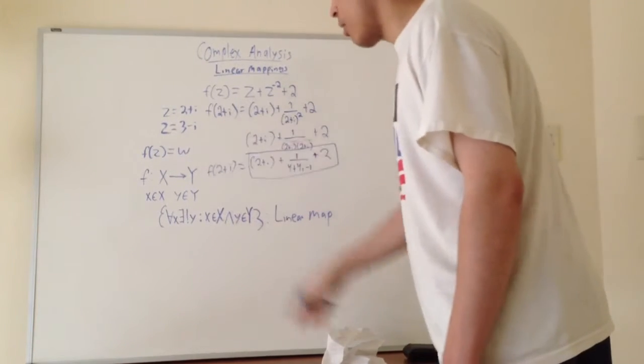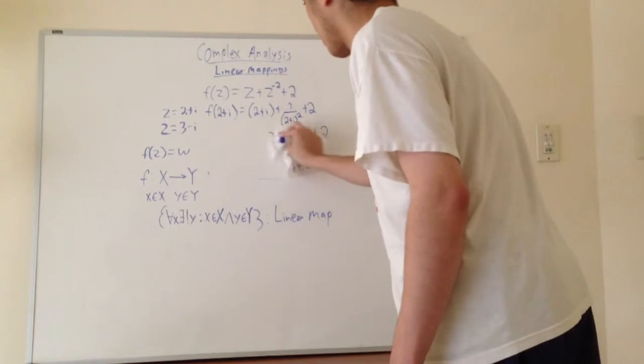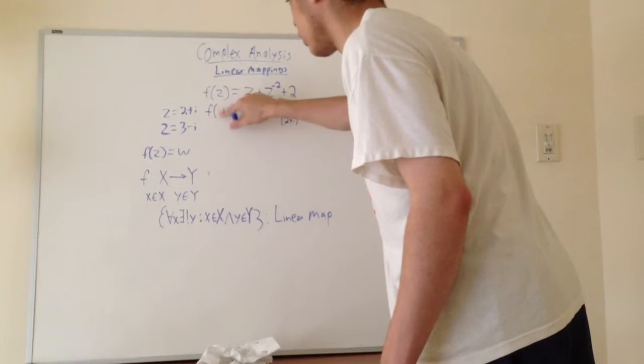And of course, if I had 3 minus i, I can go back and do this again for 3 minus i. Let's just go ahead and erase that.